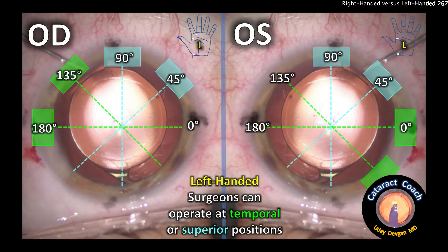Now let's switch to the left-handed surgeon. For a left-handed surgeon sitting temporally for both right eye and left eye, the left hand falls somewhere between 135 to 180 degrees — so it's very easy to make the phaco incision in that range. If you're a left-handed surgeon sitting superiorly, your hand tends to fall between the 45 and 90 degree mark, and incisions can be made there quite easily. You can see there is a lot of potential axis, slightly different for right-handed versus left-handed surgeons.